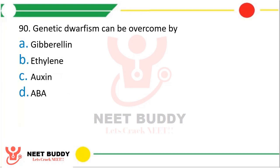Question number 90: Genetic dwarfism can be overcome by — Gibberellins, Ethylene, Auxin, or ABA. The correct answer is Option A, Gibberellins.